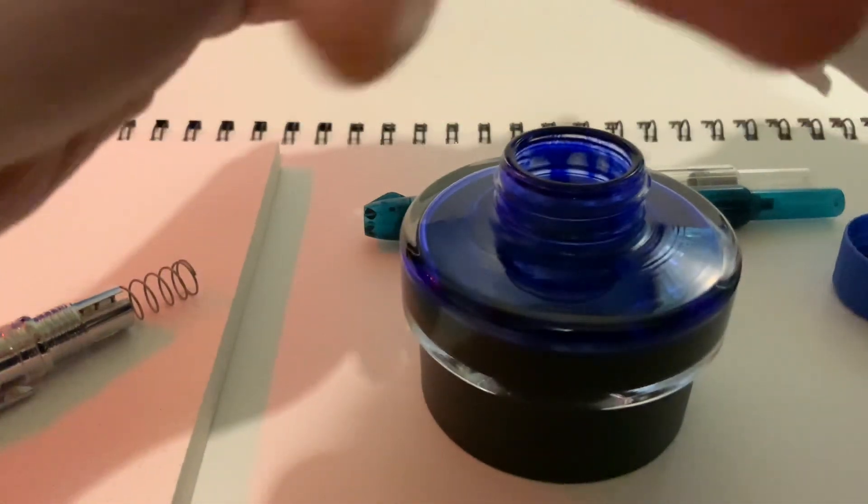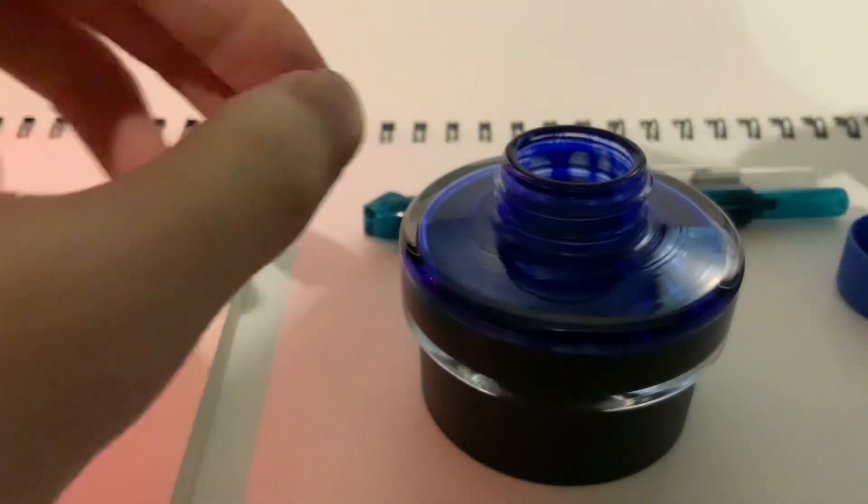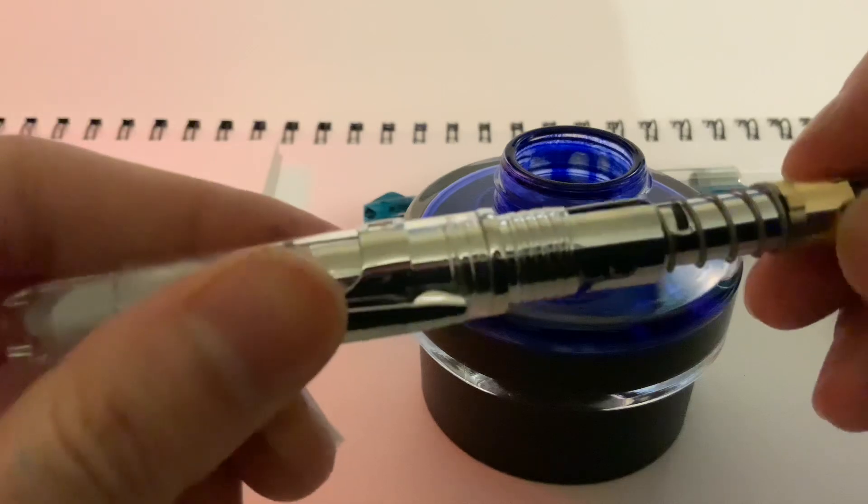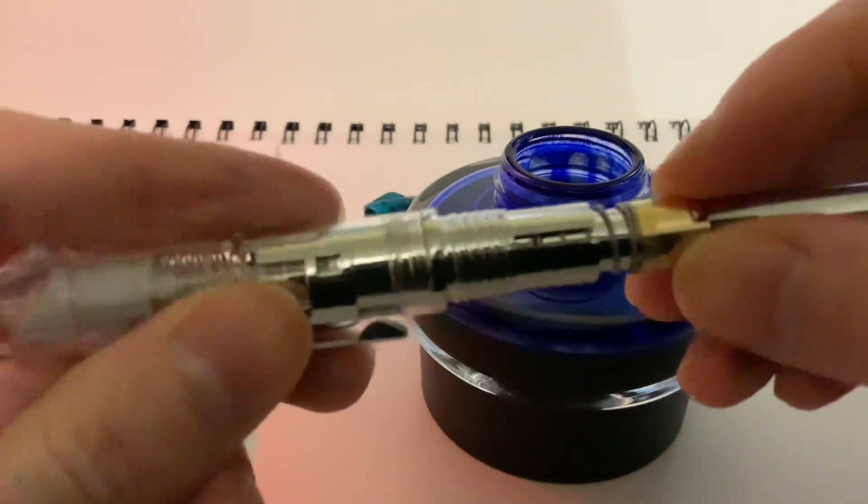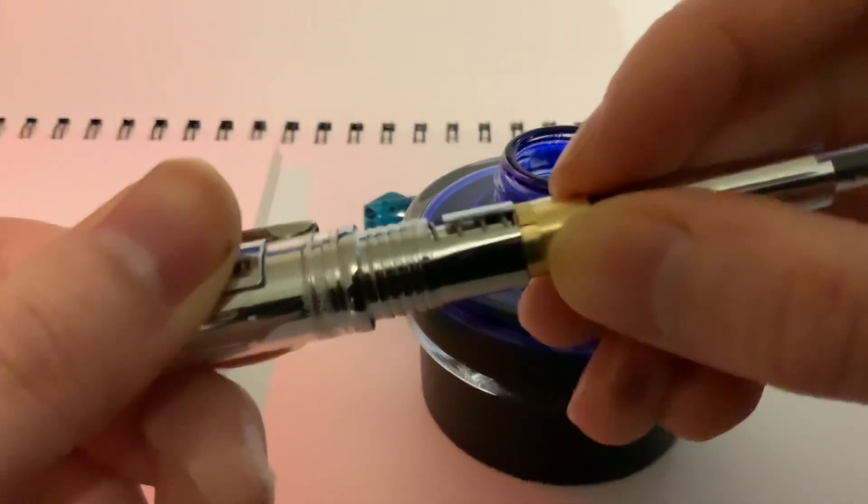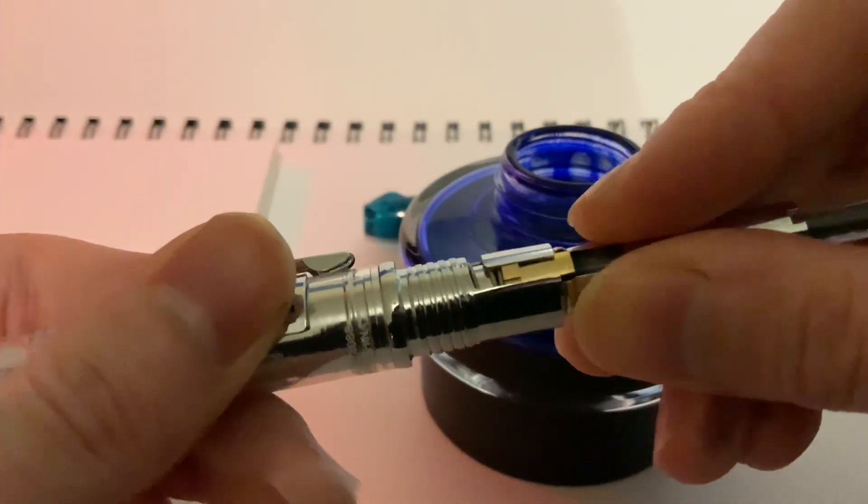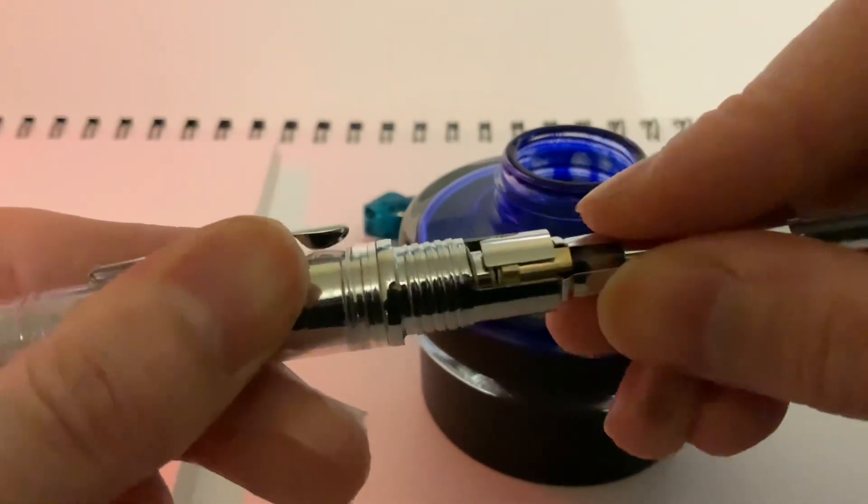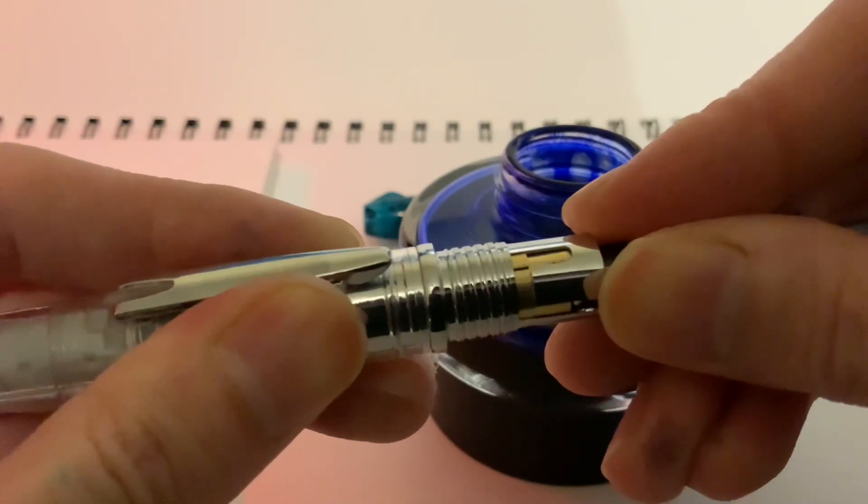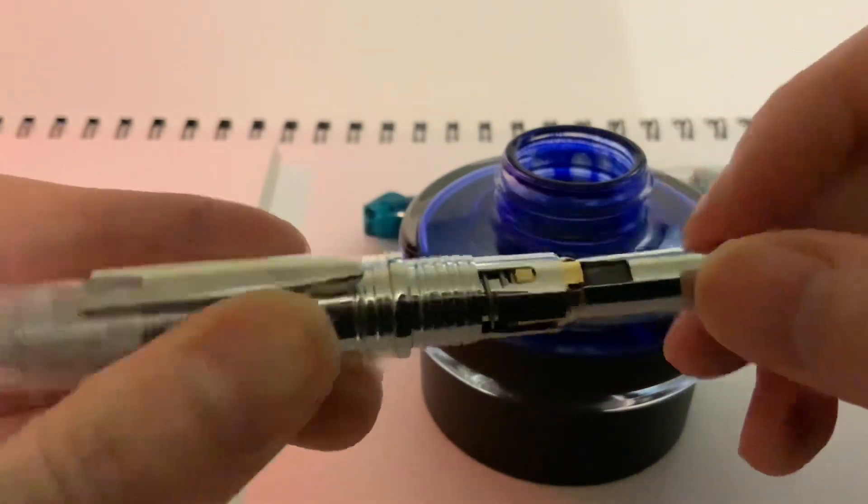Get a paper towel and wipe that off. And then put it back into the device. So we line up that nubbin there. There we go. Twist it in and then it's replaced.